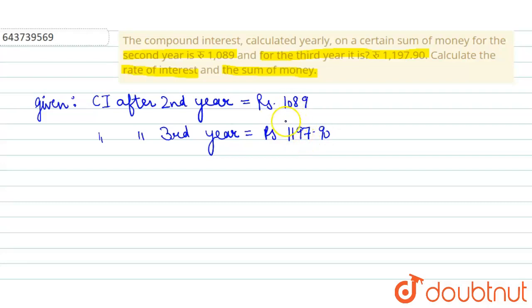Now they have given us the CI for the two successive years, so we can easily find out the difference between both of them. Difference is equal to 1197.90 minus 1089 equals rupees 108.90.